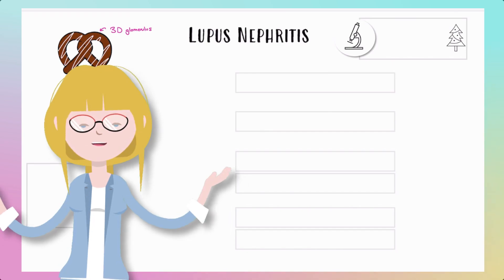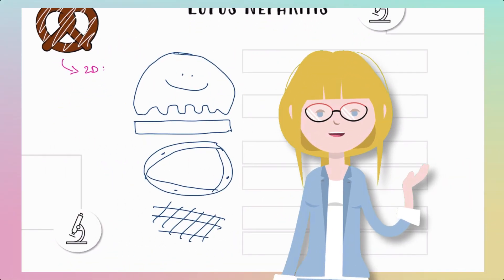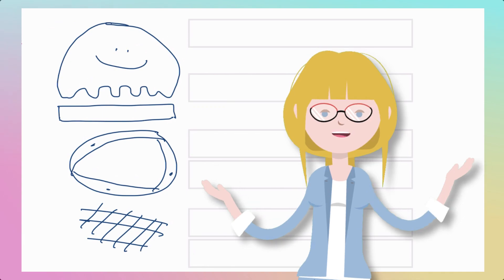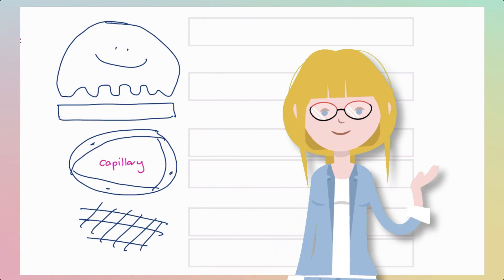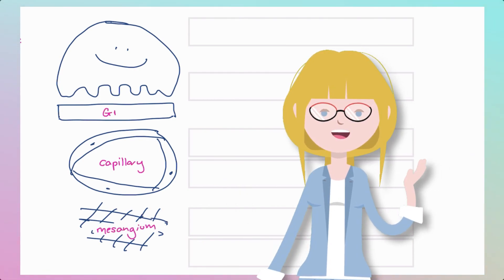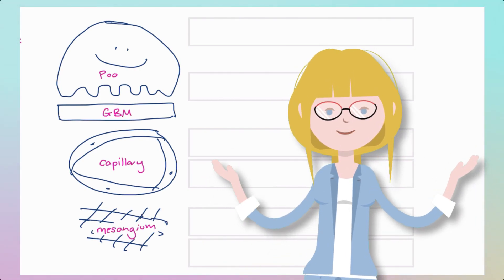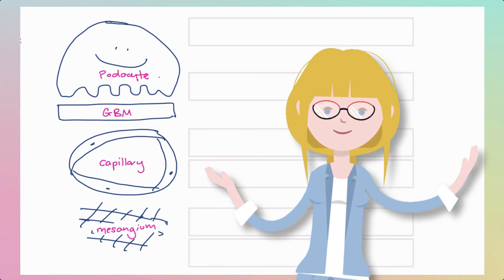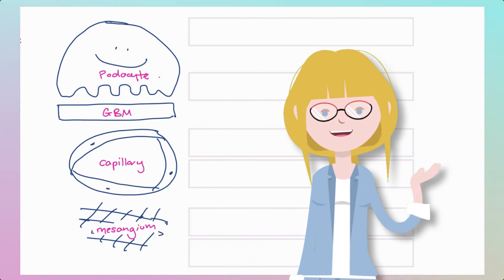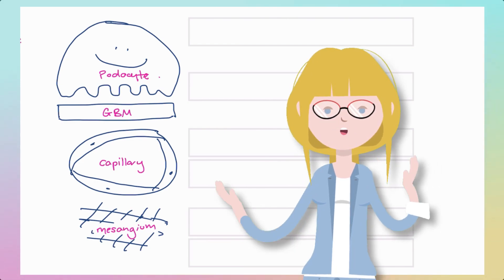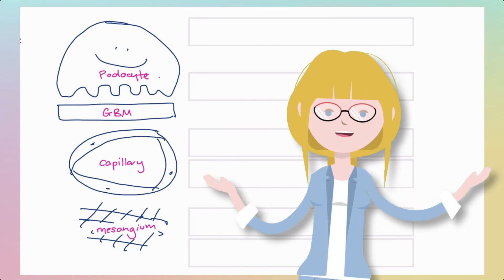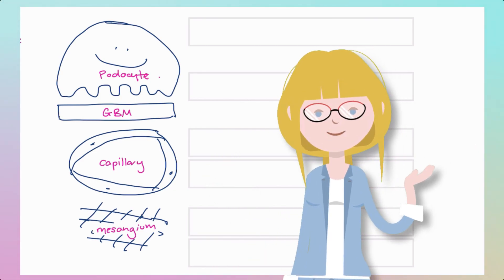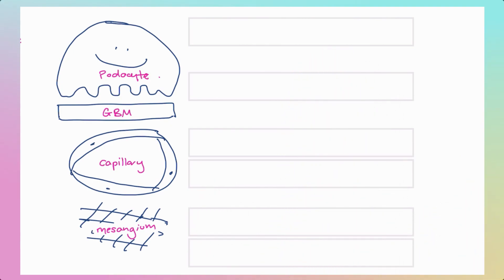Now we're going to take a little cross section of our pretzel and we're going to draw this out in 2D this time to make a little glomerular burger. So here we have our capillaries, the mesangium, we have our glomerular basement membrane, and we have our podocyte. This is the diagram that is going to be the holy grail of understanding the lupus classification system. Now we are going to place the classes of lupus onto this diagram with extreme ease. Are you ready?